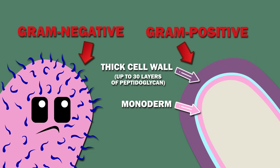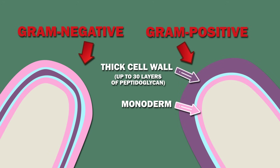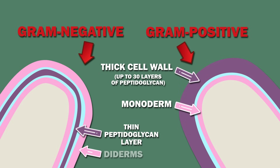Gram-negative bacteria have a much thinner cell wall, consisting of a single layer of peptidoglycan. This layer of peptidoglycan is sandwiched between two lipid bilayer membranes called diderms.